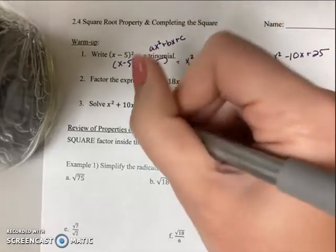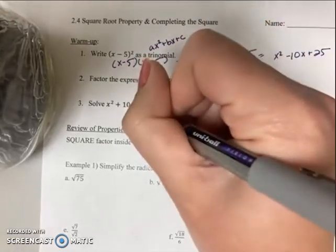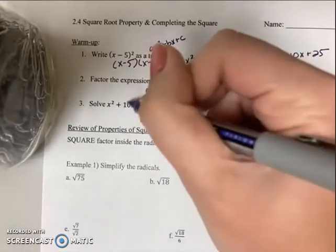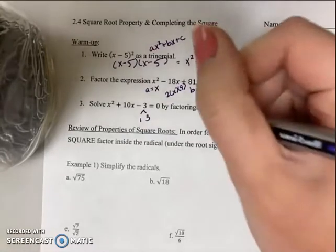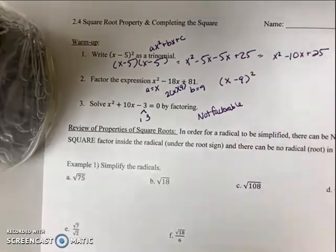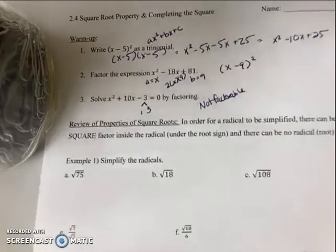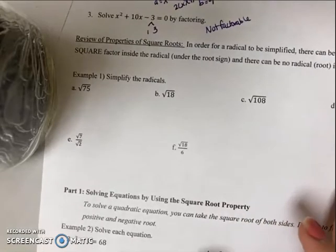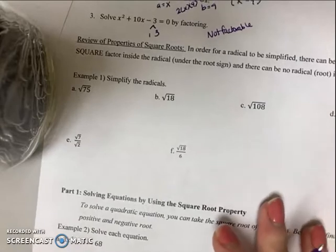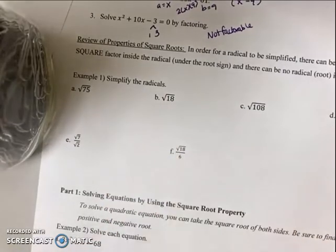Number three said to solve by factoring. However, if you list out the factors of three, there's no way to get the middle term of 10, meaning this is not factorable. But what you'll see when we do completing the square in our next class is that just because it's not factorable doesn't mean it doesn't have a solution. You actually can use completing the square to solve any quadratic function. For now, let's take a look at square roots.